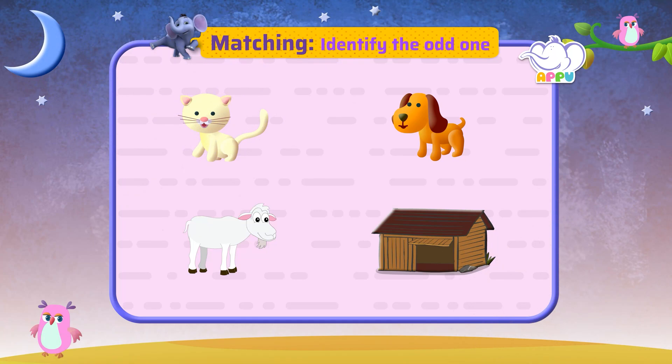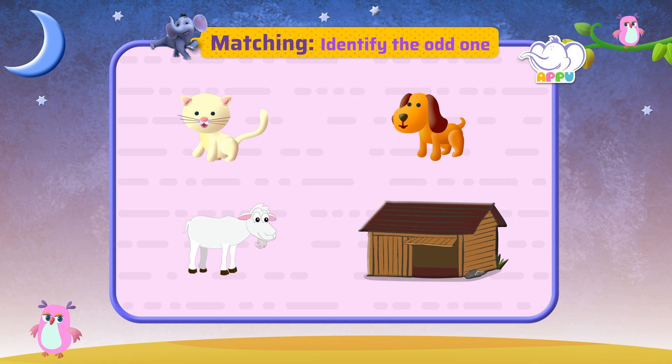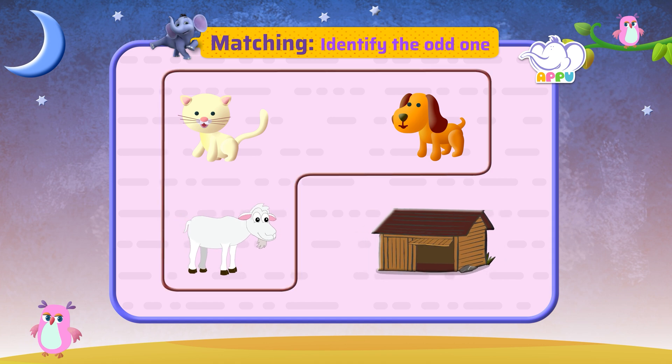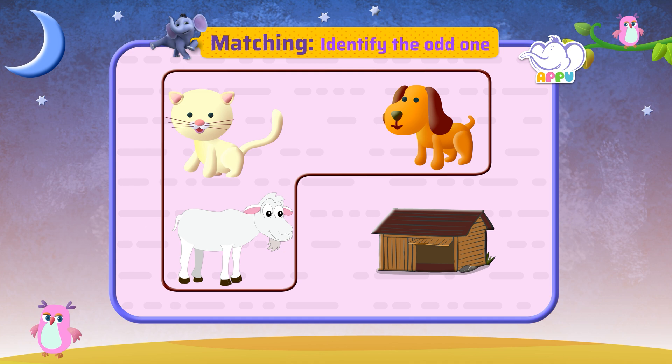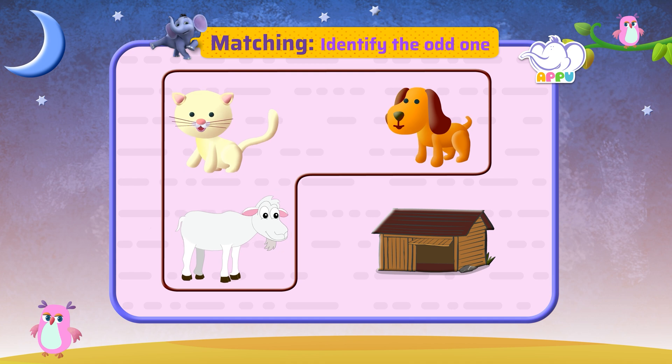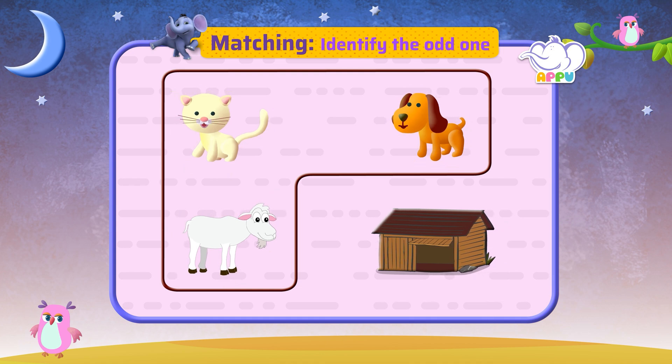Let's identify the one that does not belong to the group: a cat, a dog, a goat, a house. A cat, a dog, and a goat are animals, while a house is not. The house is the odd one.